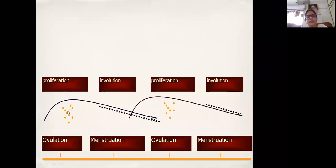There is a proliferative component followed by an involutional component. Every time pregnancy doesn't happen and there is no breastfeeding, some of the TDLUs that are formed involute and disappear. Then for the next cycle, more TDLUs are formed in anticipation of a possible pregnancy. After all, the breast's job is to produce milk. If pregnancy doesn't happen, there is more involution. This happens cyclically and is a normal change in the breast.